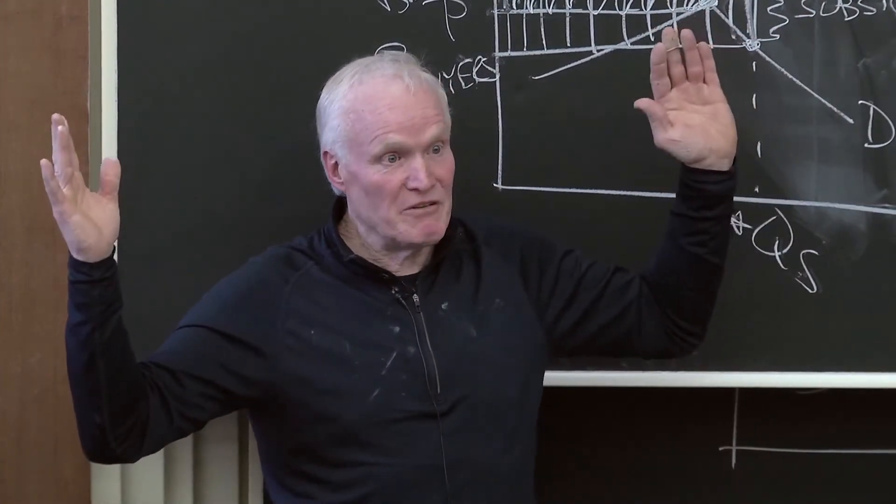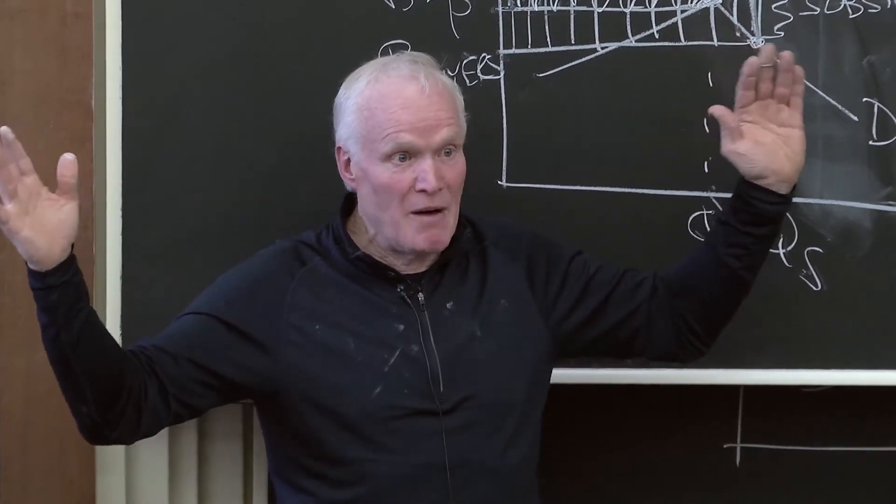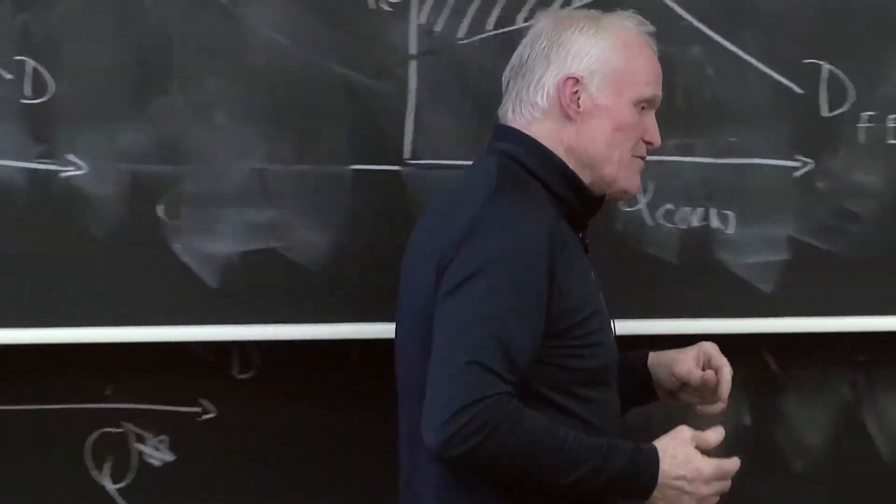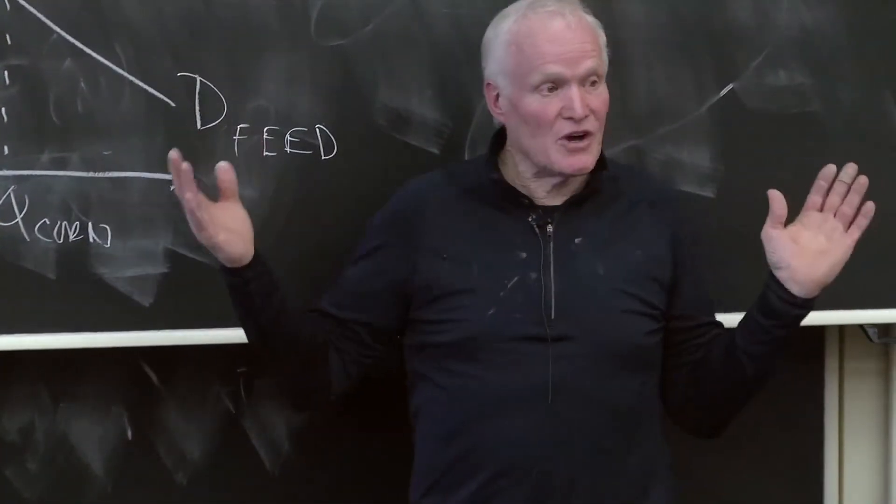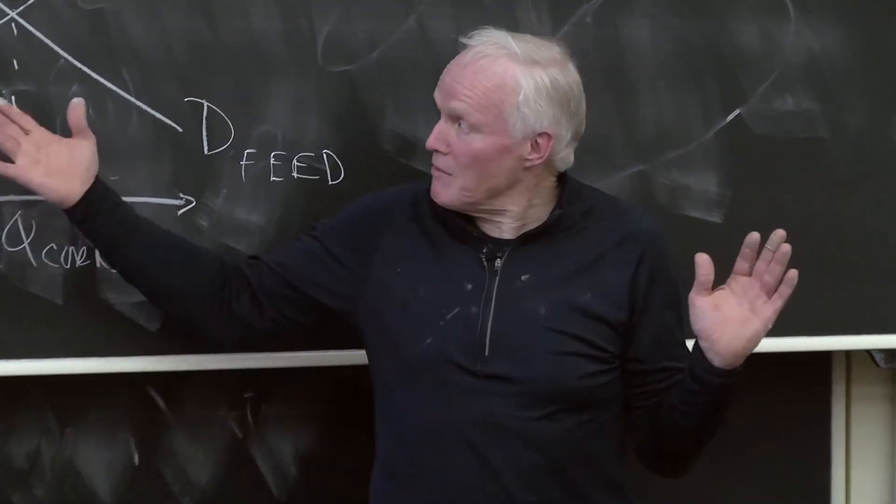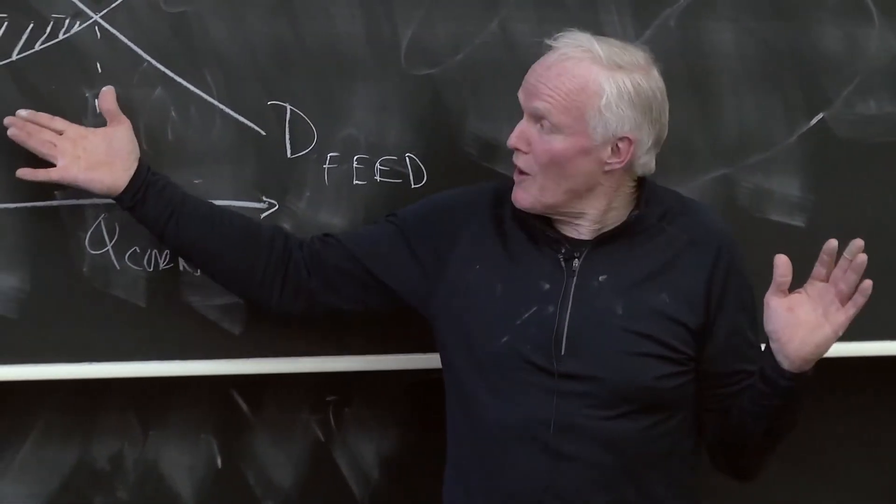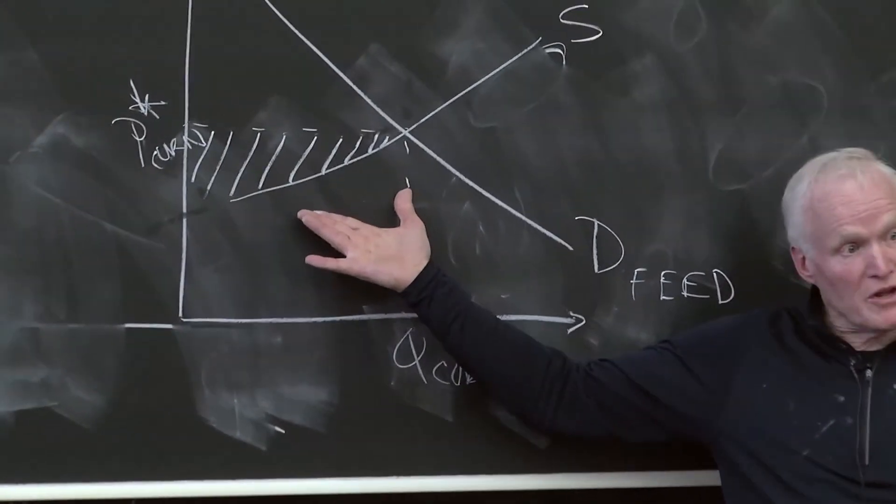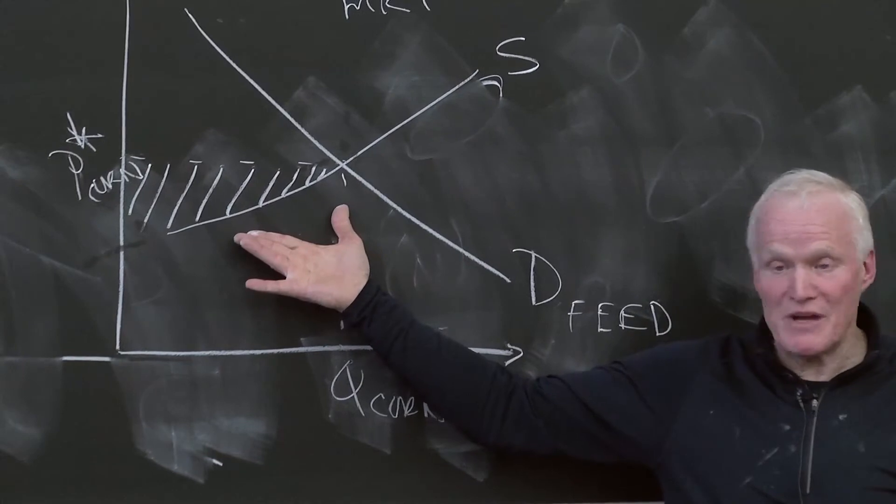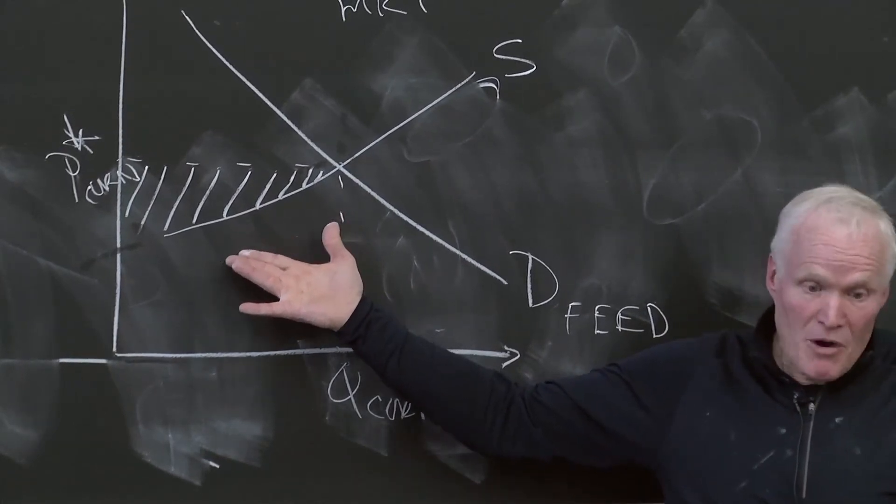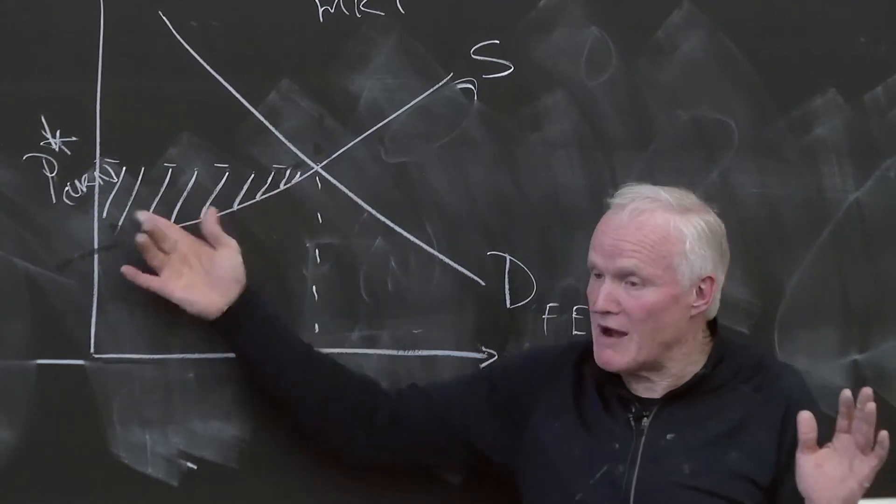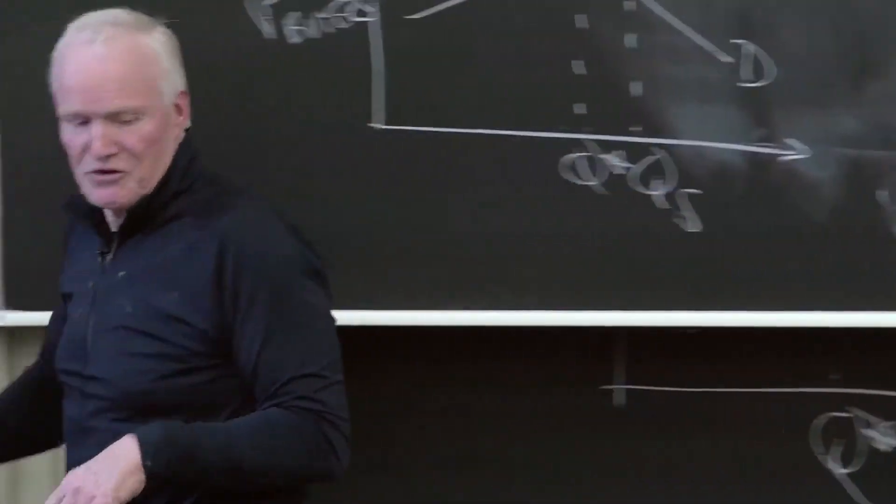Because by definition, the value of all the output has to go to somebody. And if you price all the inputs at their market value, you're going to exhaust the output value. The problem is really that you want to mark assets at their opportunity cost. But the market prices things at their best use. That's what we call the rent or profit in this case, going to the land. So that's a diversion.